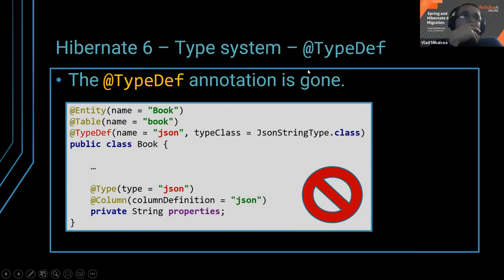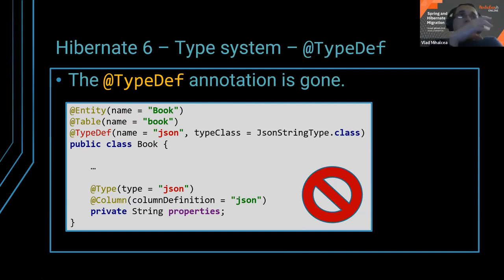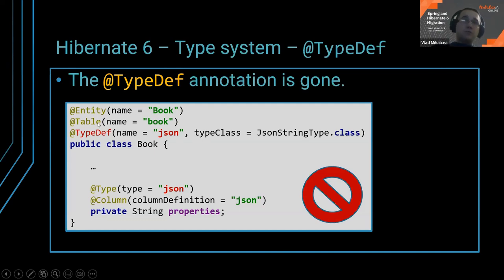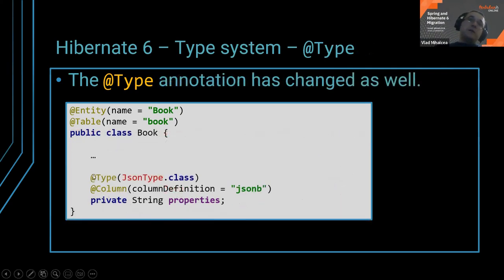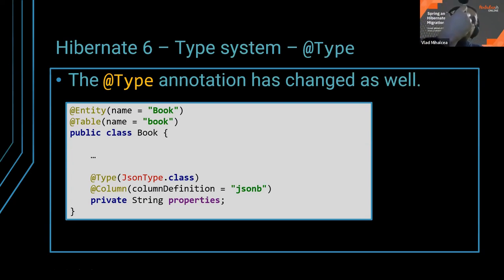When you migrate, if you've been using a lot of custom types — for JSON, arrays, or other types not natively supported by Hibernate — you've likely been using the @TypeDef annotation in Hibernate 5. TypeDef was quite cool because you could give it a name and apply it for a given entity attribute type, define it once, and reuse it in many entities. That's gone now. Instead, you have to use the @Type annotation, which is now type-safe — it takes a class, not a name. You'll have to review all those mappings and apply the changes, otherwise it won't work.